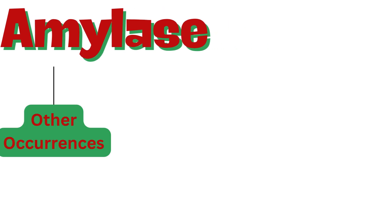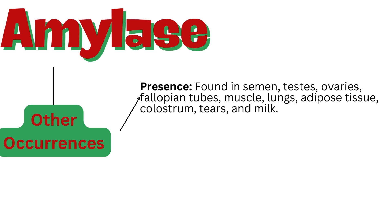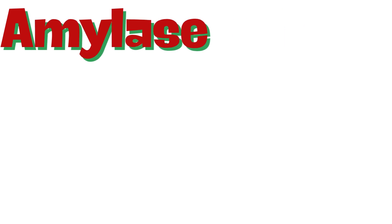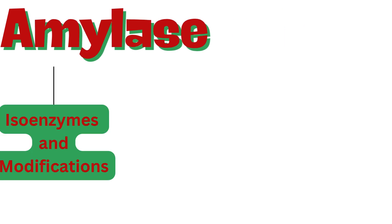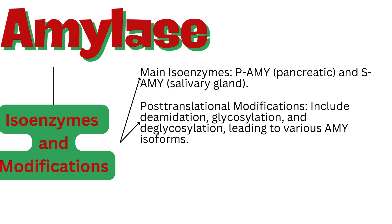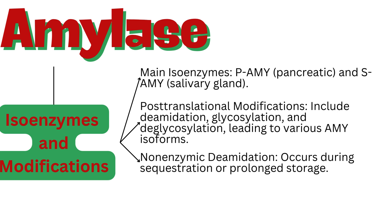Amylase is also found in various other tissues and fluids including semen, testes, ovaries, fallopian tubes, muscle, lungs, adipose tissue, colostrum, tears, and milk. Epithelial tumors of the lung and ovary may contain AMY activity. Ascitic and pleural fluids may have AMY due to tumors or pancreatitis. Amylase exists in different isoforms — the main isoenzymes are PAMY (pancreatic) and SAMY (salivary gland). Post-translational modifications include deamidation, glycosylation, and deglycosylation. Individuals with isolated PAMY deficiency experience carbohydrate maldigestion.